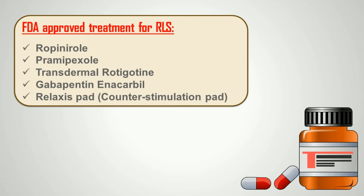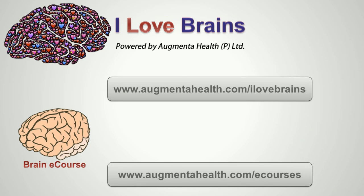There are various FDA-approved drugs and modalities for the treatment of RLS, including ropinirole, pramipexole, transdermal rotigotine, gabapentin enacarbil (which is the prodrug for gabapentin), and the Relaxis pad, which works on the counter-stimulation principle for reduction of symptoms. Do be part of I Love Brains for further updates and discussions, and read through the BRAIN eCourse material for other topics.